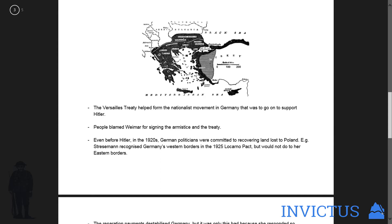As we can see on this map here of the chopping up of the former Austro-Hungarian Empire — the Treaty of Versailles helped to form the nationalist movement in Germany that was to go on to support Hitler. Because the extreme limitations placed by the treaty, the diktat, and the resentment against the Weimar government that signed the treaty, were humiliating and basically destroyed the German economy and induced very bad social problems.